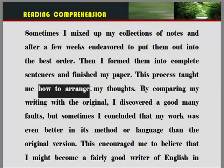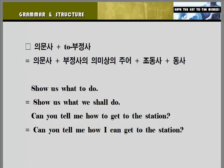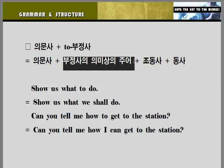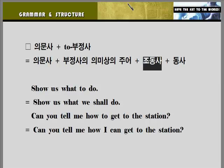'How to 부정사'가 나왔습니다. 의문사 플러스 투 부정사에 대해서 살펴보겠습니다. 의문사 플러스 투 부정사는 절로 바꿔서 쓸 수 있습니다. 절은 주어와 동사가 있으면 절이 되는 거예요. 주어라고 하는 것은 누가 그런 행동을 하느냐, 행동의 주체를 말합니다. 그래서 의문사 절로 바꿀 때 투 부정사의 의미상의 주어, 누가 그 행동을 하느냐, 그것이 주어가 되는 거죠. 그리고 조동사가 쓰인다는 거 염두에 두시기 바랍니다.